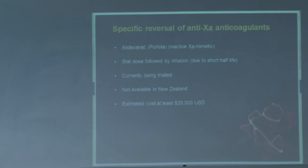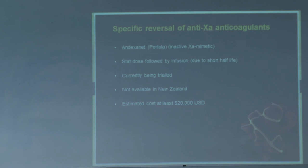There is a promising drug on the horizon called Andexanet alfa. It is supposed to be a very good drug — effective towards all oral anti-Factor Xa agents — but it is not yet available and is still being trialled. It is also very costly at around $20,000.